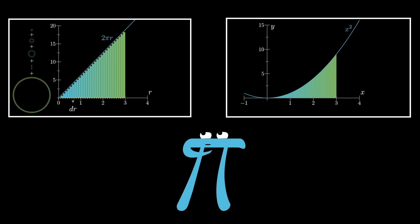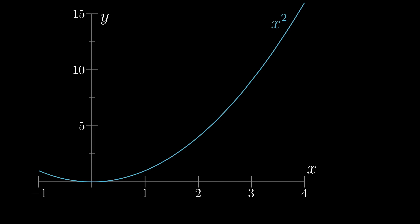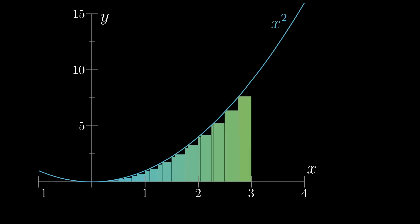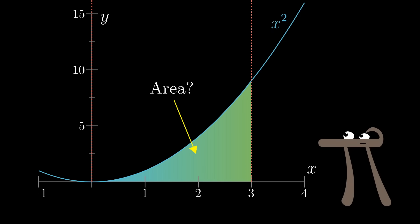I mean, we were lucky in the circle problem that the relevant area turned out to be a triangle, but imagine instead something like a parabola, the graph of x squared. What's the area underneath that curve, say between the values of x equals 0 and x equals 3? Well, it's hard to think about, right? And let me reframe that question in a slightly different way. We'll fix that left endpoint in place at 0 and let the right endpoint vary.